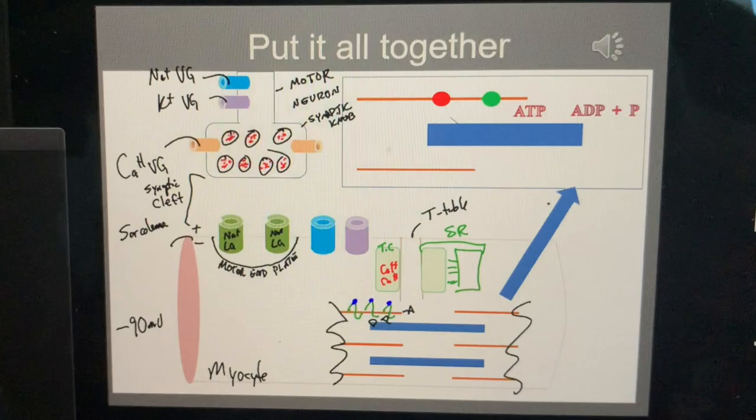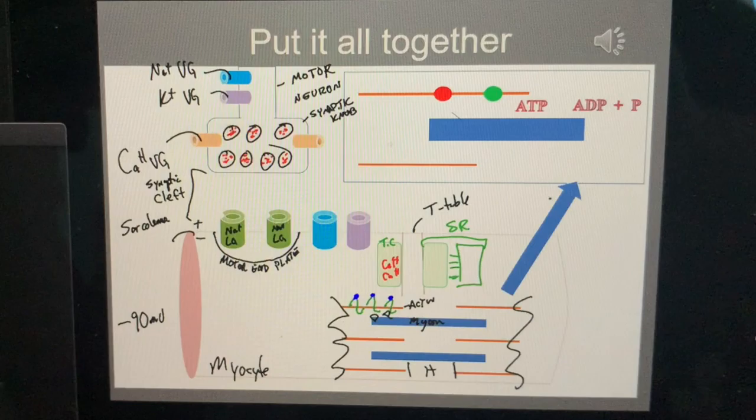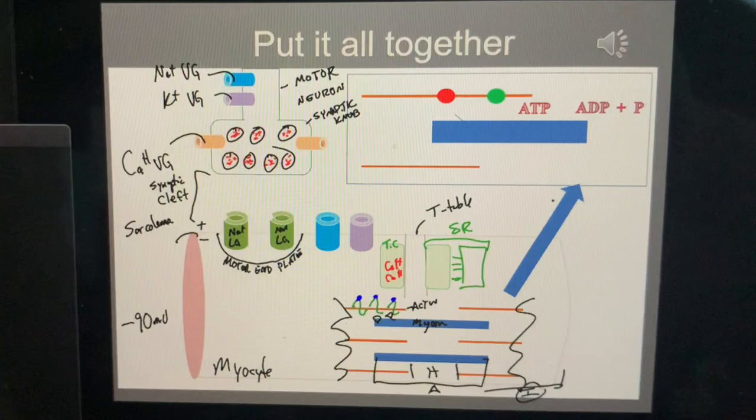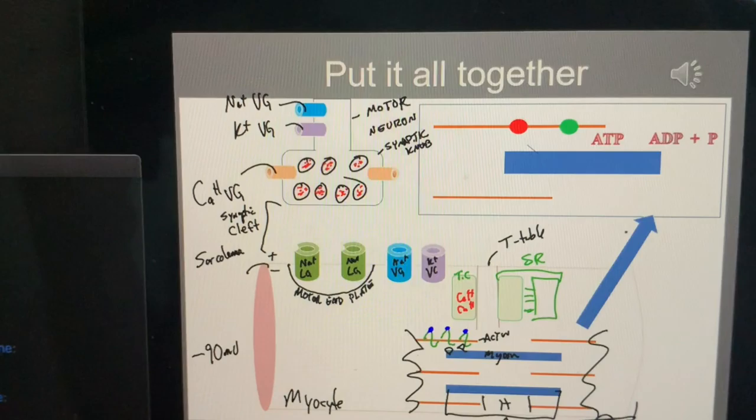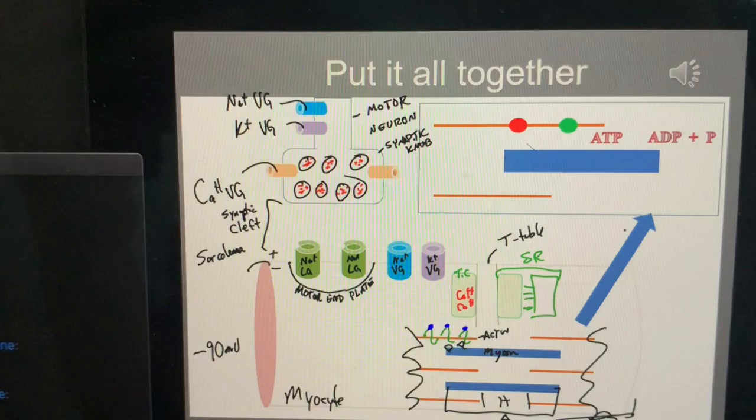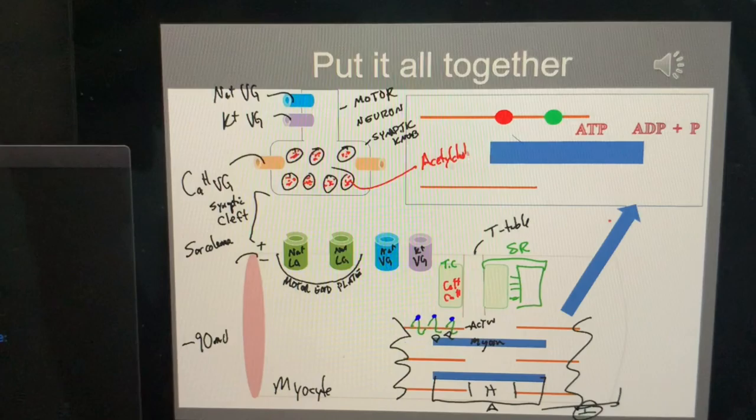The thin is actin, the thick is myosin. This zone right here is the H zone, this is the A band, this is the I band. This over here is the sodium voltage-gated channel and this is a potassium voltage-gated channel. Did I miss anything?